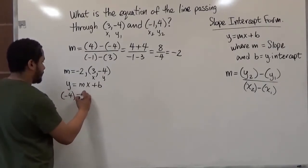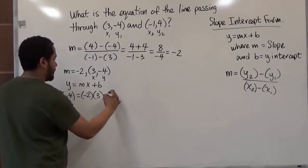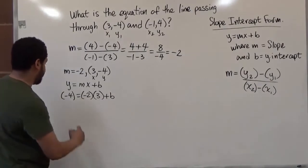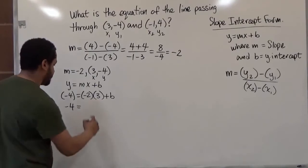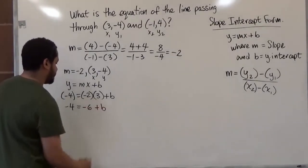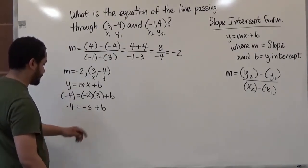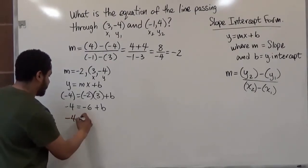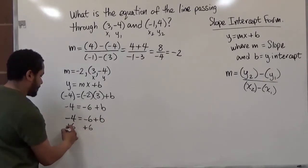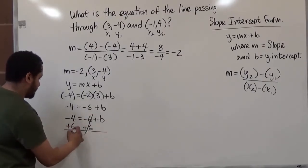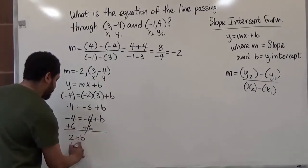So our y value is negative 4, our m value is negative 2, our x value is 3, and our b remains b — we'll be solving for b. We have negative 4 on the left side. On the right, we have negative 2 times 3, which is negative 6, plus our b value. The next step, we're going to add 6 to both sides using the additive inverse of negative 6 so we can solve for b. We have plus 6 and plus 6 to both sides — these cancel — and we have positive 2 on the right. So positive 2 equals b, and our b value is equal to 2.